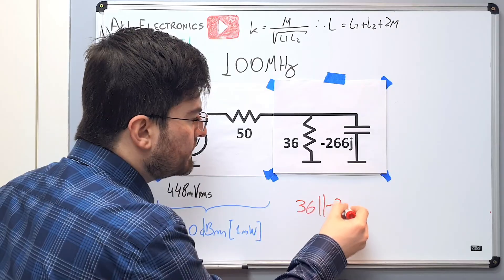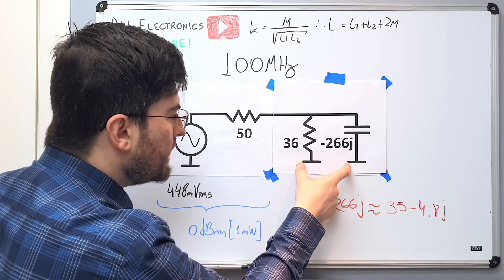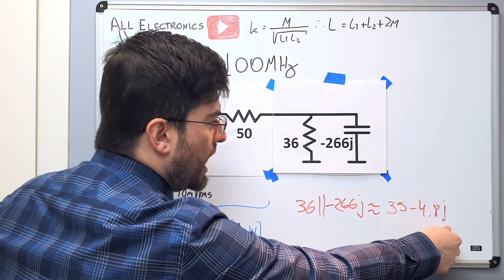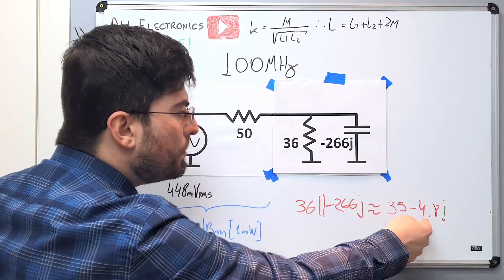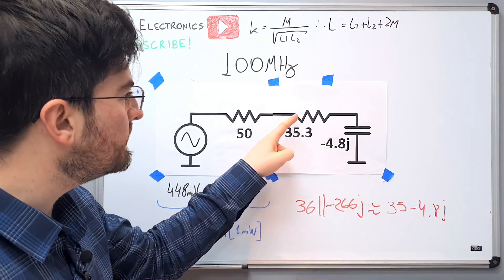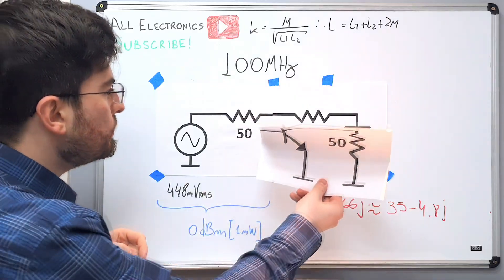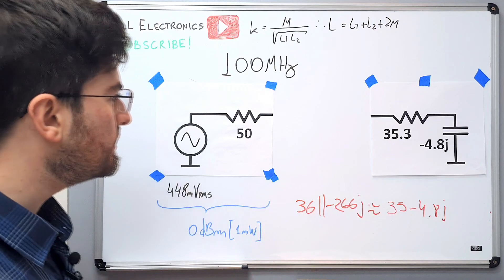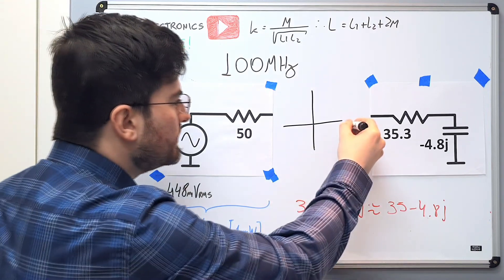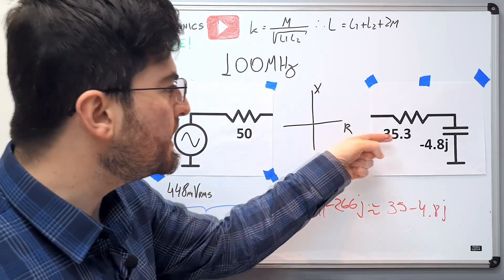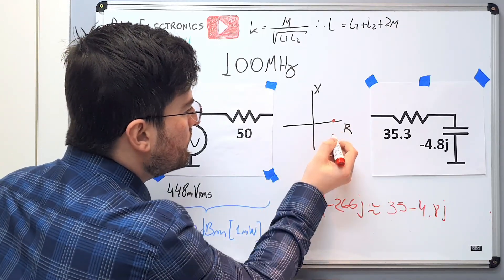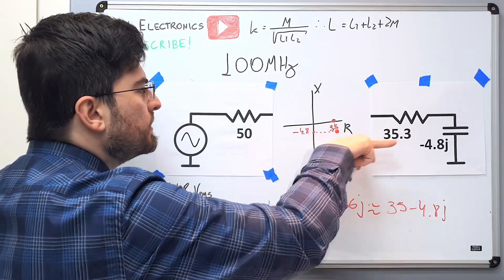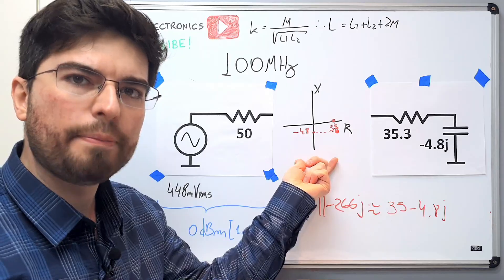The parallel combination of 36 with negative j266 gives us a true impedance of 35 minus j4.8. This is an impedance because it is a series combination, and it represents the base of the transistor. If we look at any impedance, we can draw it on a Cartesian plot with resistance on one axis and reactance on the other. This impedance, 35.3 real plus negative 4.8 imaginary, would be plotted at 35 on the resistance axis and negative 4.8 on the reactance axis. This Cartesian representation is the first step to creating a Smith chart.